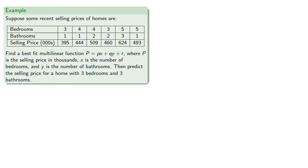So for example, suppose we have some data on recent home selling prices based on the number of bedrooms and bathrooms. Let's find a best fit multilinear function p = px + qy + r, where p is the selling price in thousands, x is the number of bedrooms, and y is the number of bathrooms.